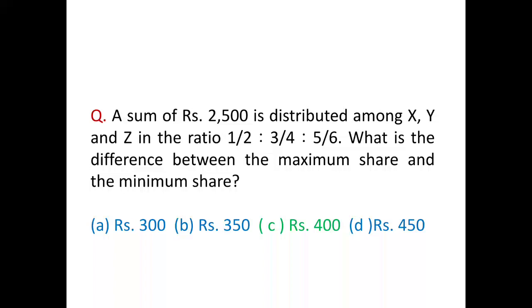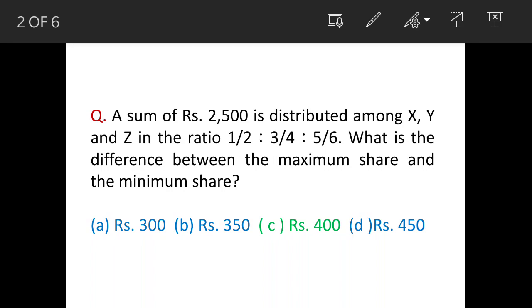Today we'll see a question on ratios. A sum of rupees 2,500 is distributed among three people, X, Y, and Z, in the ratio of 1/2 : 3/4 : 5/6. What is the difference between the maximum share and the minimum share? The answer is option C, rupees 400.